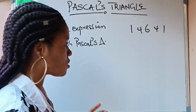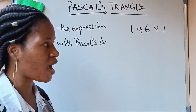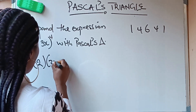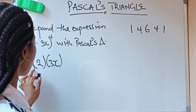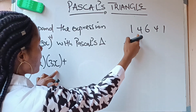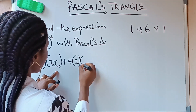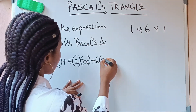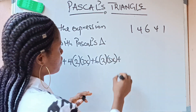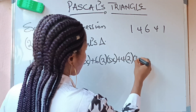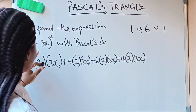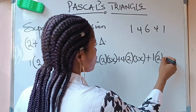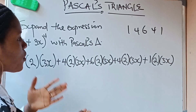We have (2 + 3x) raised to the power of 4. So first of all, we write: 1 × (2)(3x), plus 4 × (2)(3x), plus 6 × (2)(3x), plus 4 × (2)(3x), plus 1 × (2)(3x). Just leave it like this — the 2 and 3x are what we are working with here.